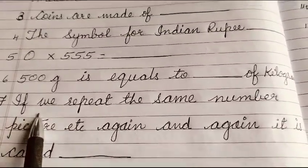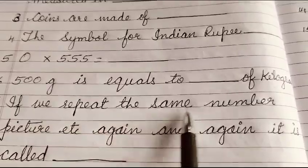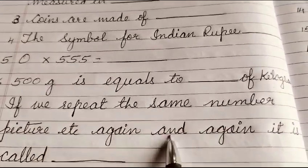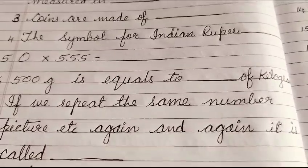Question number 7: If we repeat the same number, picture, etc. again and again, it is called dash.